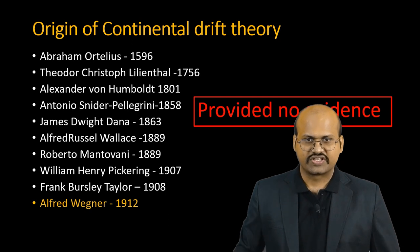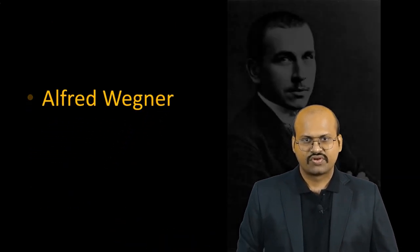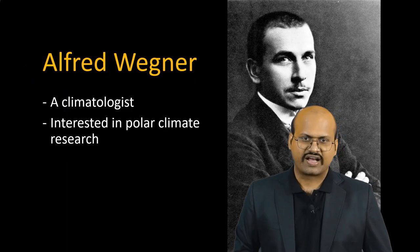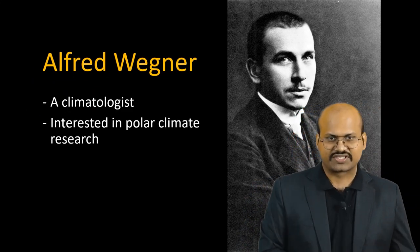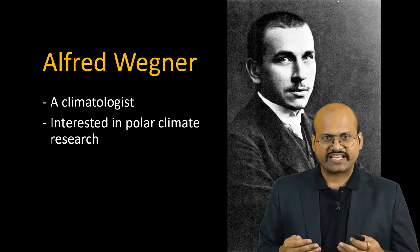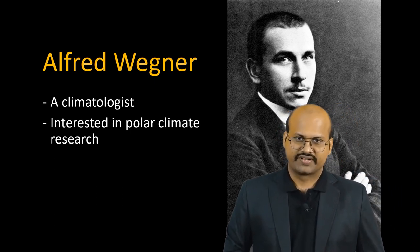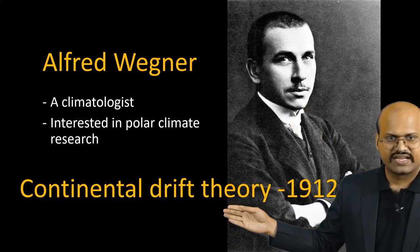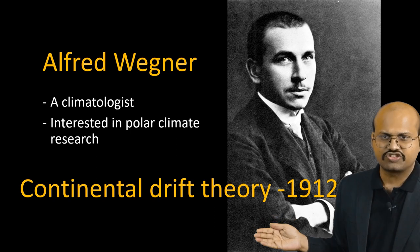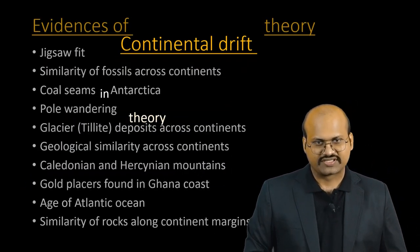All of this changed with the arrival of Alfred Wegener. Wegener was himself a climatologist interested in weather and climate studies. He did many expeditions to Greenland to study polar climate, and based on his observations, he gave Continental Drift Theory in 1912, in which he provided a number of evidences to support his theory.